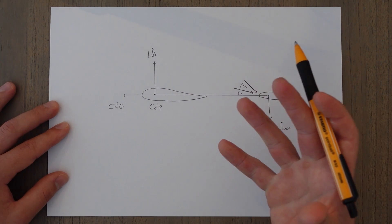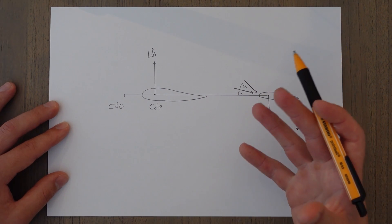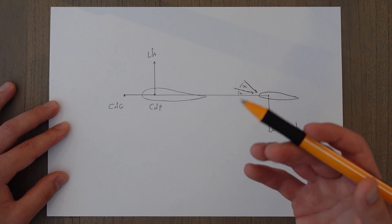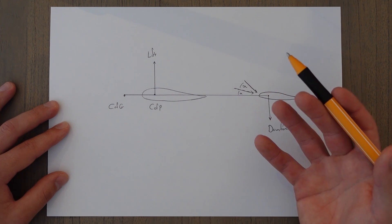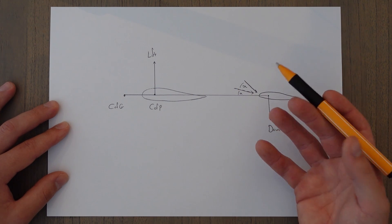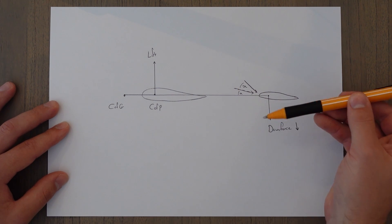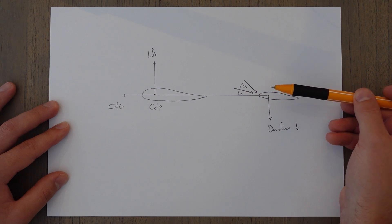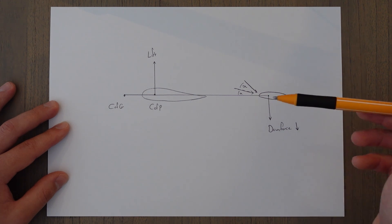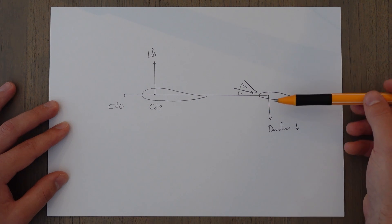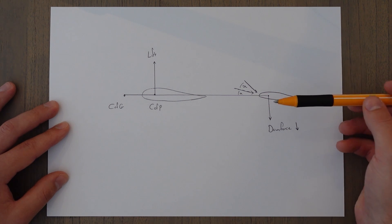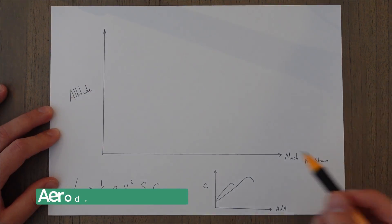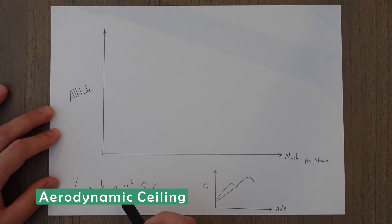We solve the problem of Mach Tuck either using speed brakes, or by using something called a Mach trim system — a Mach trimmer — which automatically adjusts the horizontal stabilizer in order to counteract any pitch changes when traveling close to the critical Mach number.